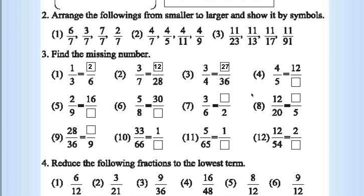Similarly, you can find out all the missing numbers. 12 by 6 is 2. 6 twos are 12. 6 nines are 54, so this is 9. 6 nines are 54, this is 2 by 9. 5 by 5 is 1 and 65 by 5 is 13.